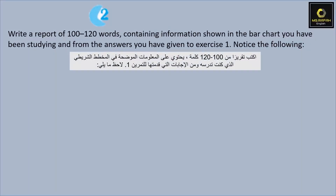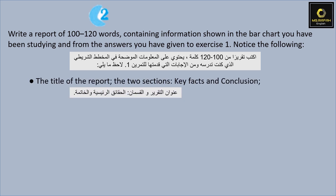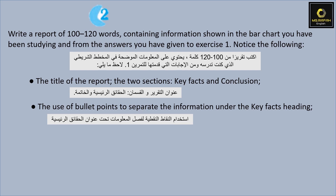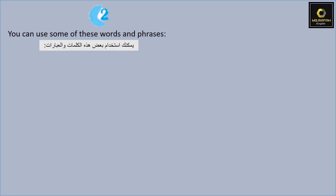Now write a report of 100 to 120 words containing information shown in the bar chart you have been studying, and from the answers you have given to exercise 1. Notice the following: the title of the report, the two sections key facts and conclusion - لازم يكون في عنا عناوين، حقائق أساسية وخاتمة - the use of bullet points to separate the information under the key facts heading, and the use of figures and numbers.